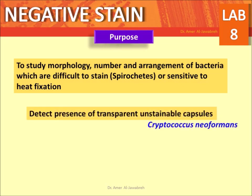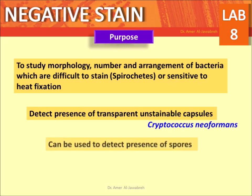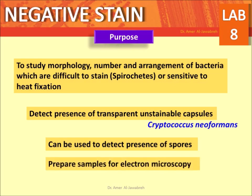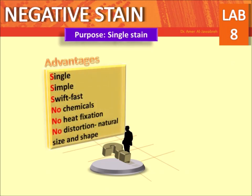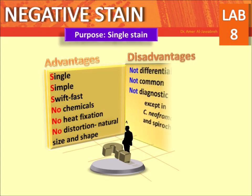Negative staining is used to detect the presence of transparent and non-stainable capsules, such as in Cryptococcus neoformans, and can be used to detect the presence of spores and to prepare samples for electron microscopy. It is a single stain technique.